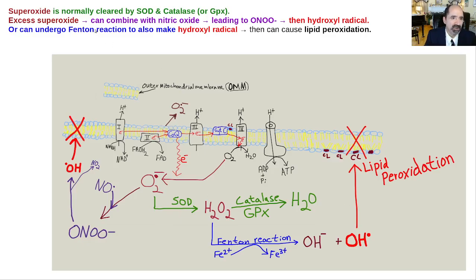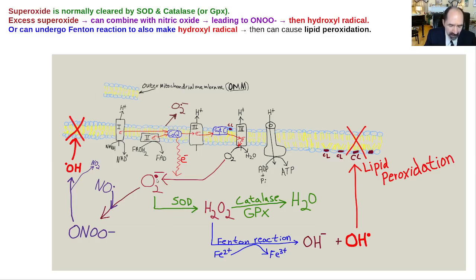Superoxide is normally cleared by superoxide dismutase and catalase or glutathione peroxidase. Here is the electron transport chain in the mitochondria, the intermitochondrial membrane. Electrons are transferred down these protein complexes, but in certain contexts there will be leakage of electrons or reversal of electron transport, whereby a single electron will come down to the oxygen — and that is superoxide. The dot means it's a free radical having an unpaired electron in its outer orbital. This superoxide is neutralized by superoxide dismutase (SOD) into hydrogen peroxide H2O2, which is further neutralized by catalase or glutathione peroxidase into H2O. That's what normally happens.